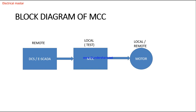Before reading the schematic, see this block diagram of MCC. Normally the MCC panel receives commands from the DCS or SCADA unit. For example, an operator gives a start or stop command for a field motor through this MCC panel. The MCC panel receives the command from the DCS or SCADA unit and then passes that command to the field motors. This is the block diagram of the MCC panel.